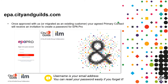Whether you have migrated onto EPA Pro or you are a brand-new customer, the primary contact at your centre will receive an email invitation to create a password for EPA Pro. When you first log in, you will use your email address as your username, and should you forget your password once created, you can reset this easily at any time. We suggest that you save the login page to your favourites for easy access.